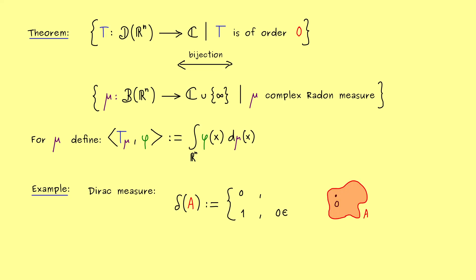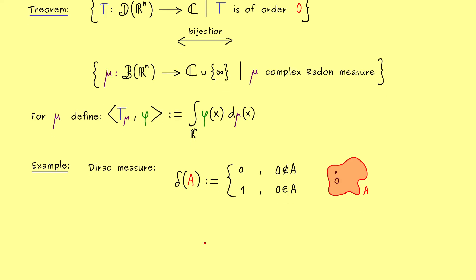Therefore, if 0 is in A, we get out the value 1. And otherwise, we just get 0. So the interpretation here is simply, that the whole mass, the whole charge we have, lies just in one point. Therefore, the Dirac measure can describe a point charge.